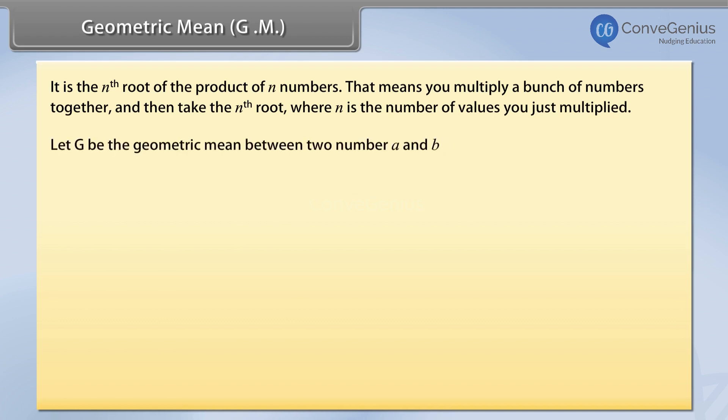Let g be the geometric mean between two numbers a and b. So a, g, b are in GP. g/a equals b/g, or g squared equals a times b. Therefore, g equals the square root of a times b.